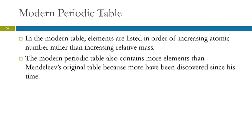So the modern periodic table. Instead of putting them in order of mass, we put them in order of increasing atomic number. Mendeleev didn't know about protons. So he just went by the mass of the substance.